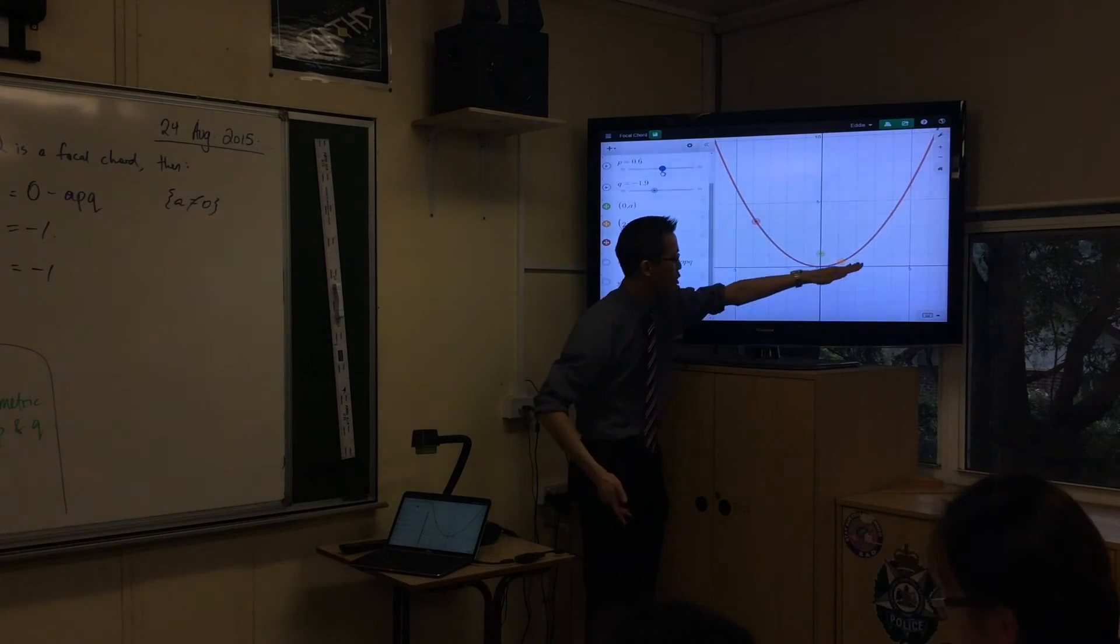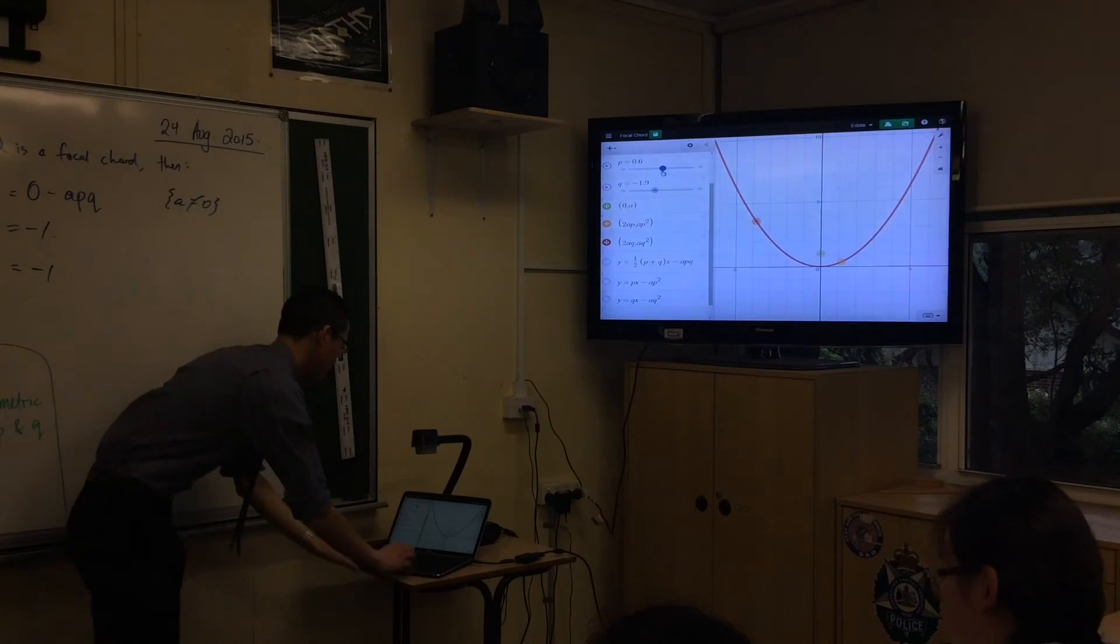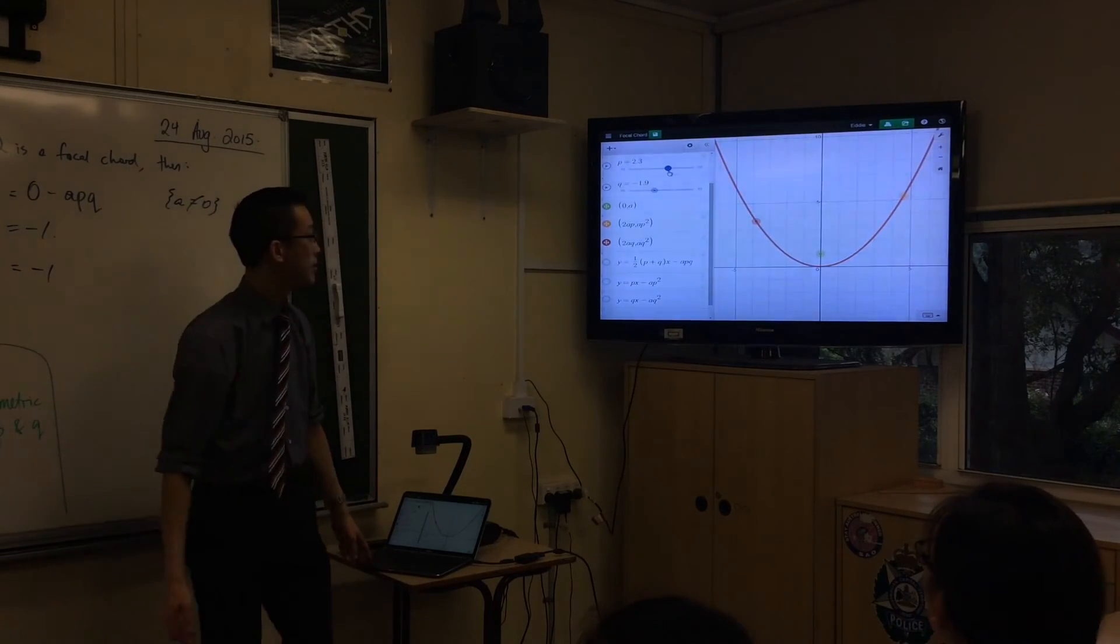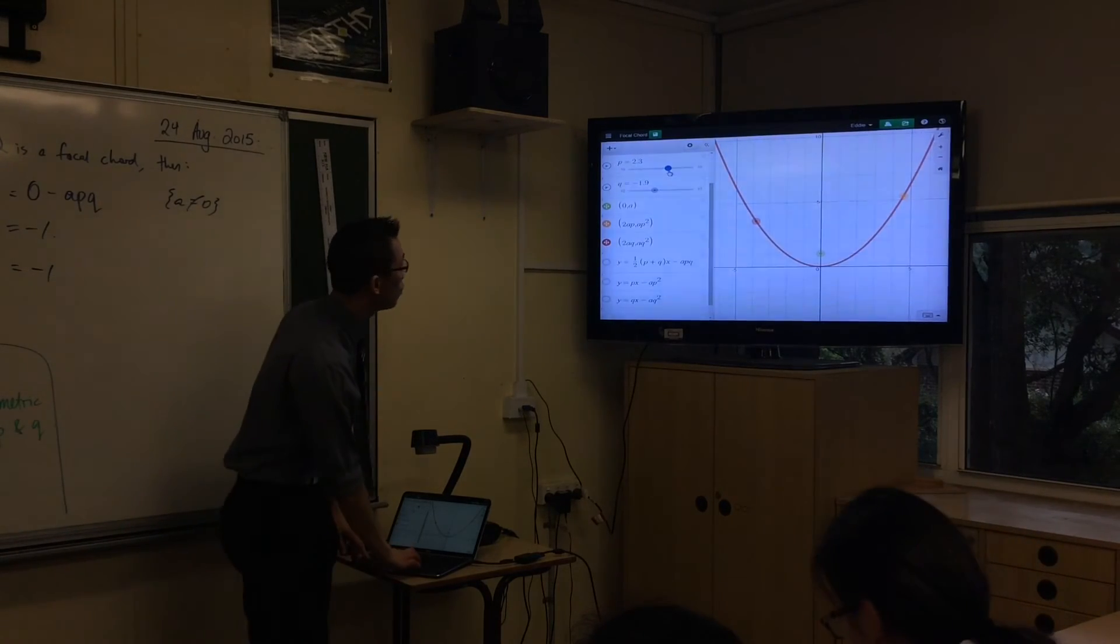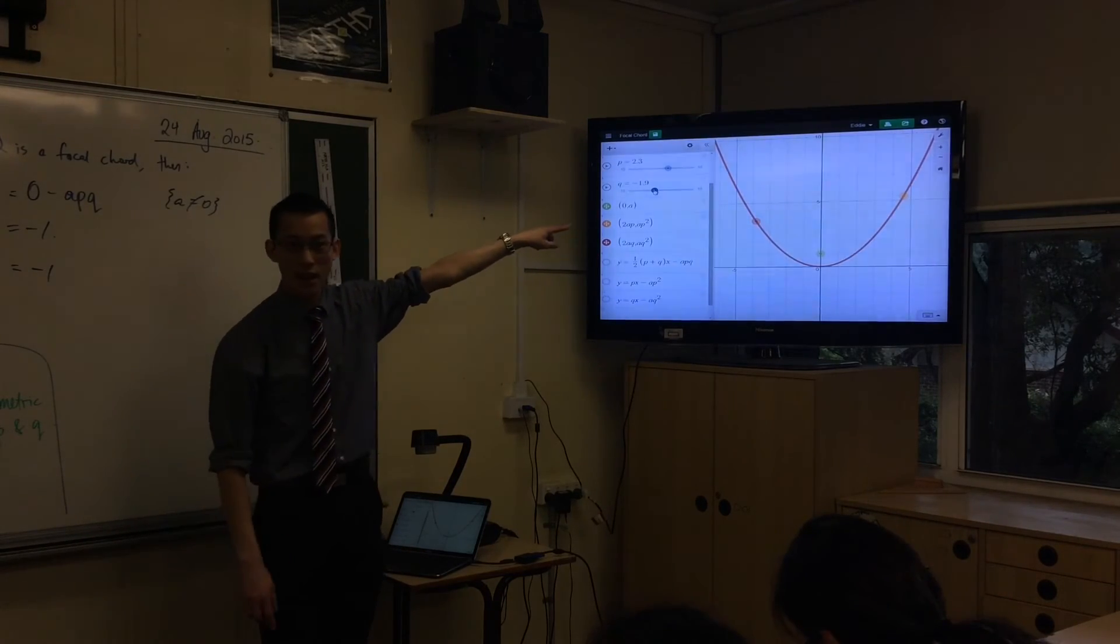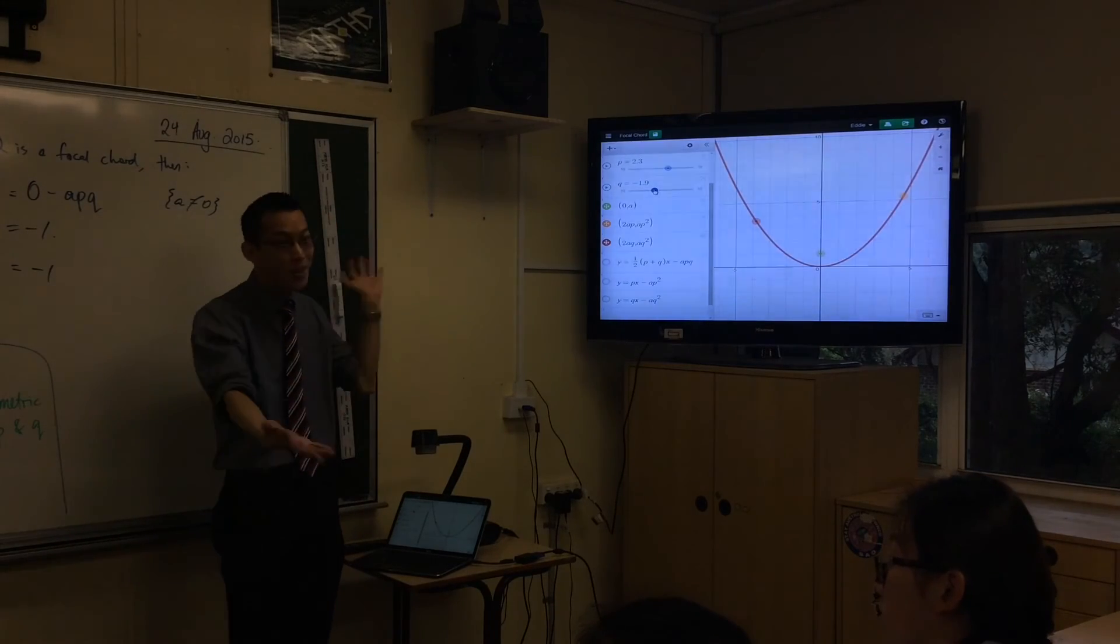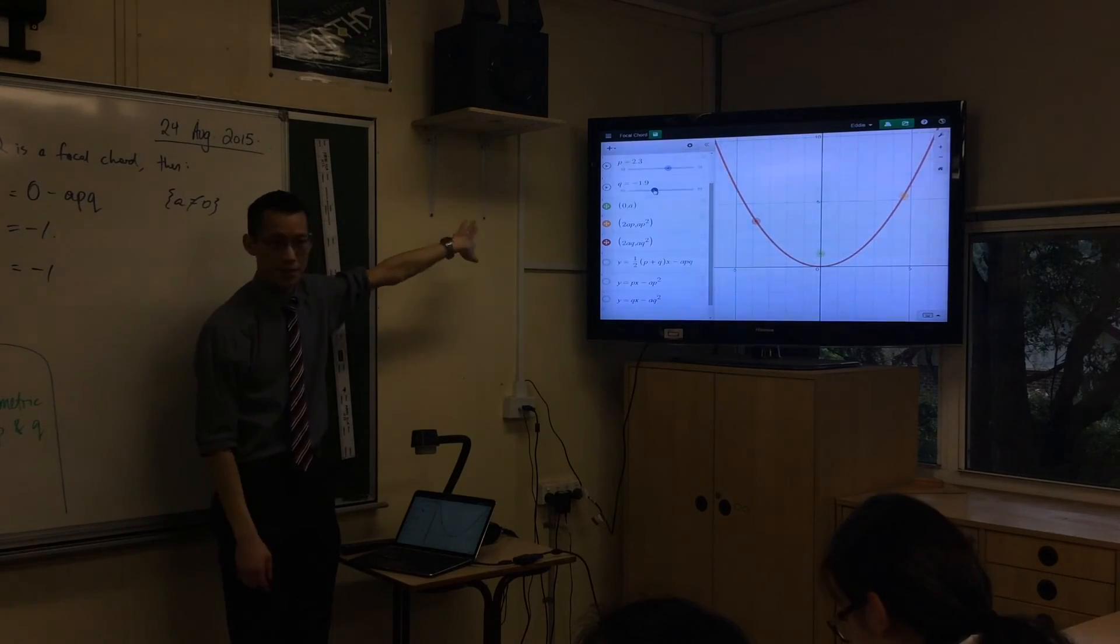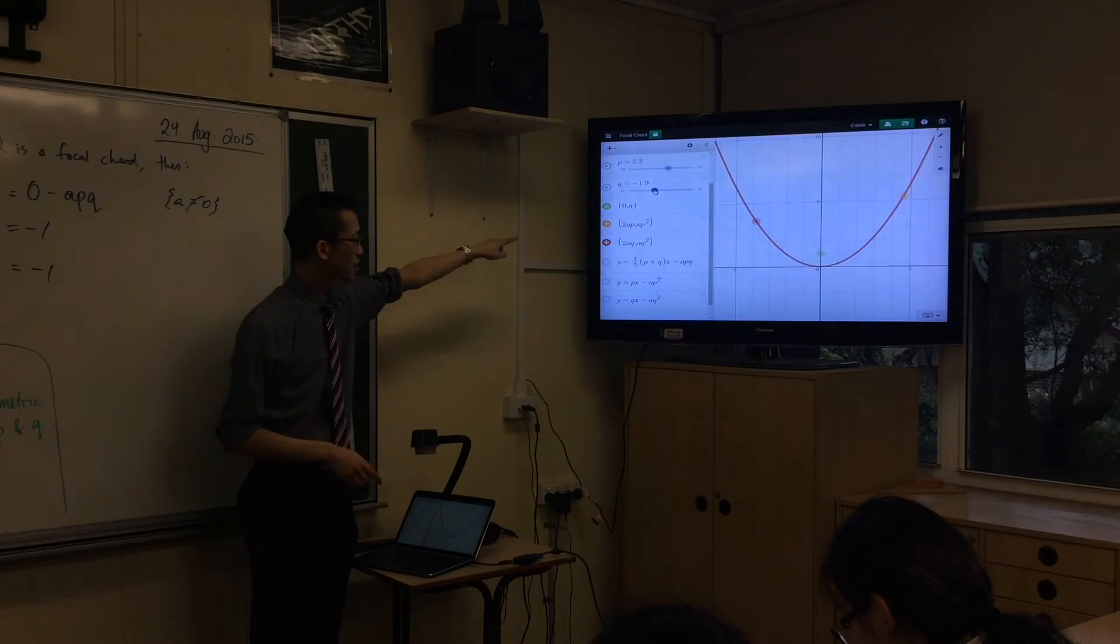And q, I've got over here on the other side, q is our red point over the left-hand side. Why is it on the left-hand side? It's negative. Because I want a gradient that's negative, and the only place on this parabola where the gradient is negative is over there on the negative x values.